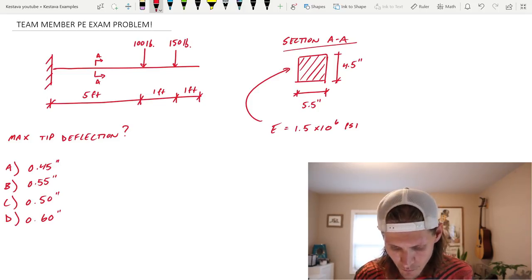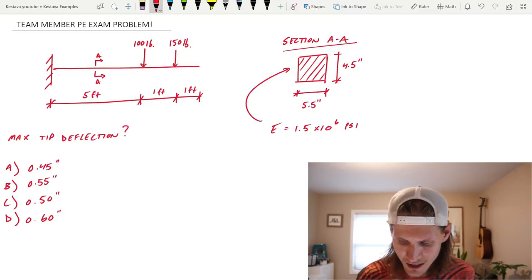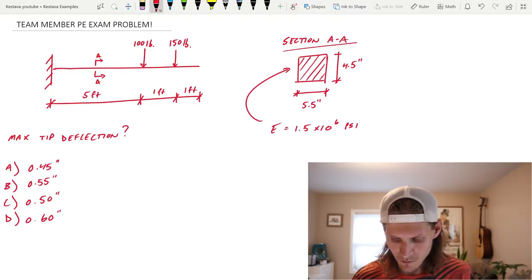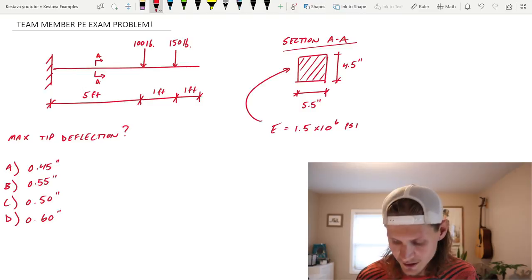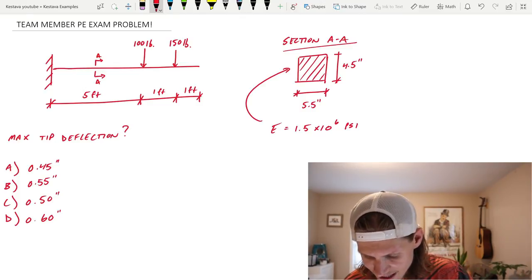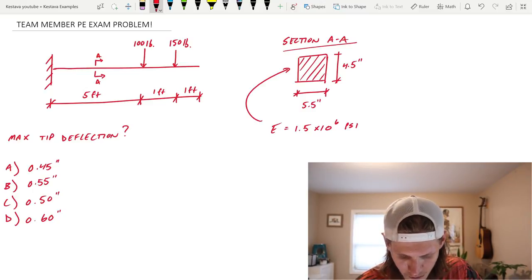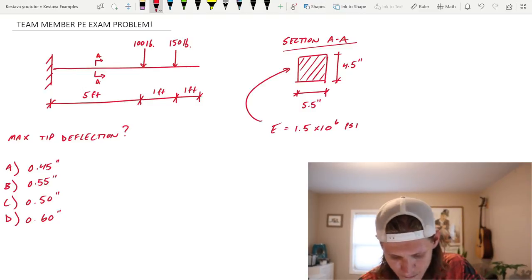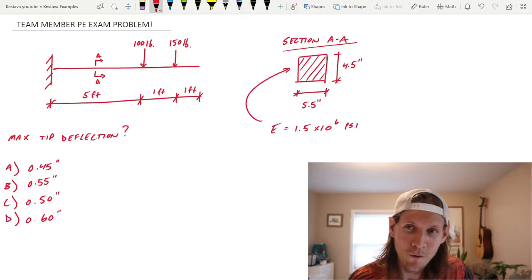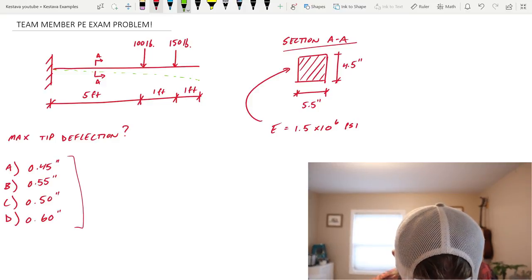We have a cantilevered member with two point loads along that cantilever and they give us the cross section as I've shown here in section AA. It is a rectangular square box four and a half inches deep, five inches wide and a modulus of elasticity of 1.5 times 10 to the 6 PSI. And the question is, what is the max tip deflection? Our team member, what's your name? Narathip gave us four solutions. And as I said, he's looking for tip deflection.